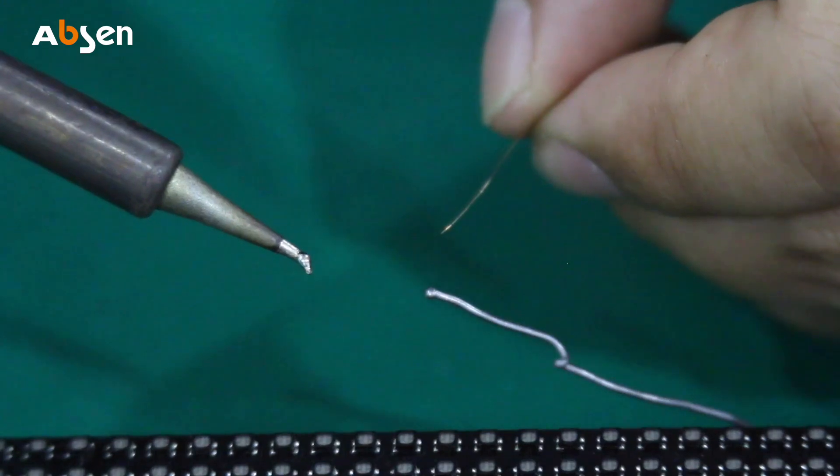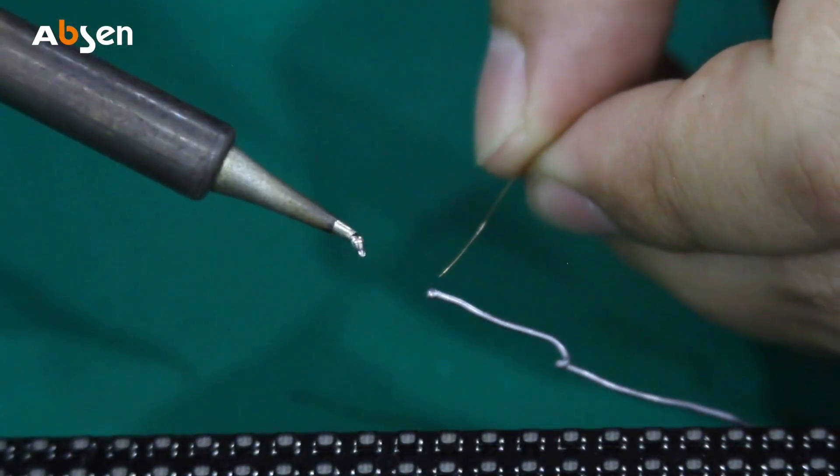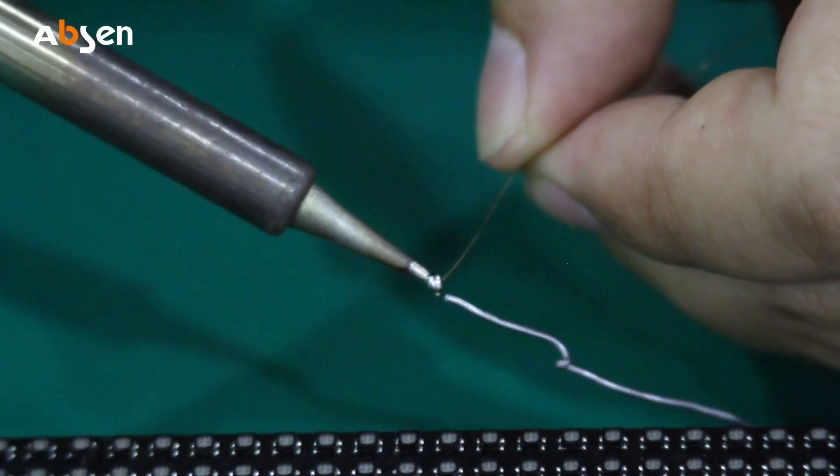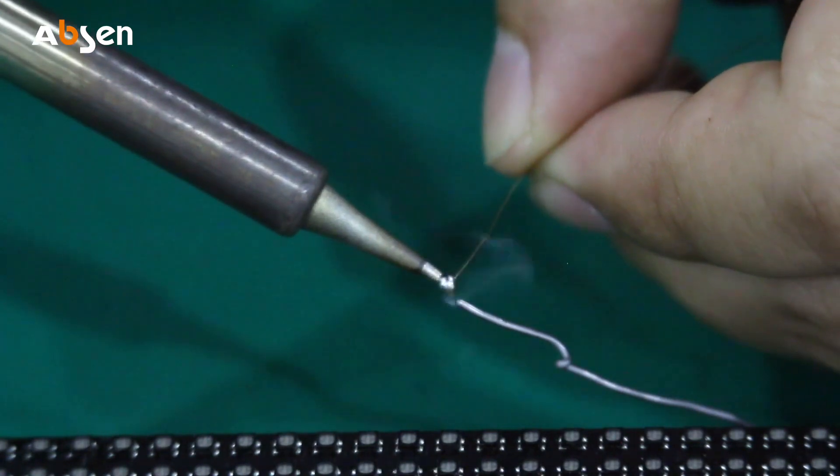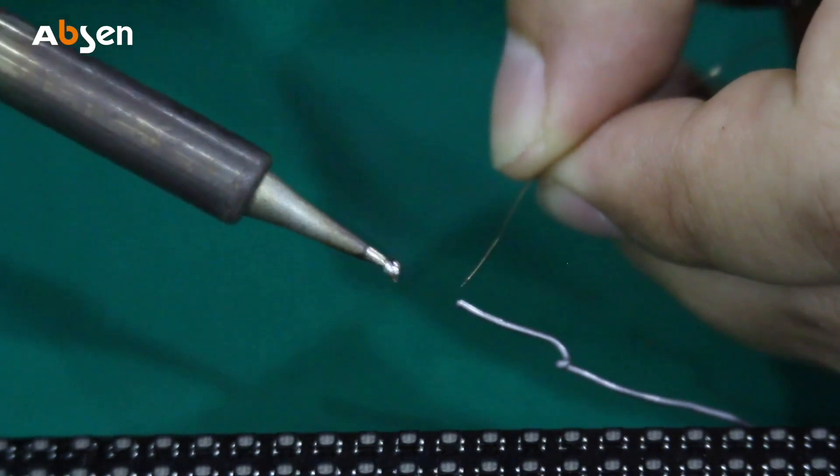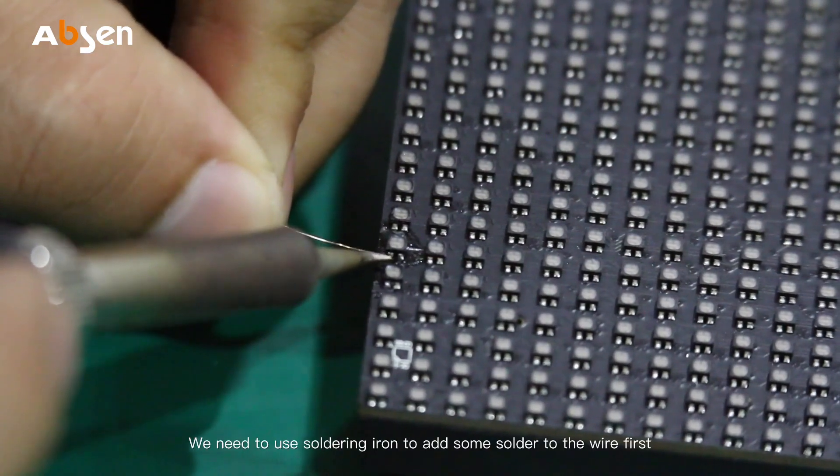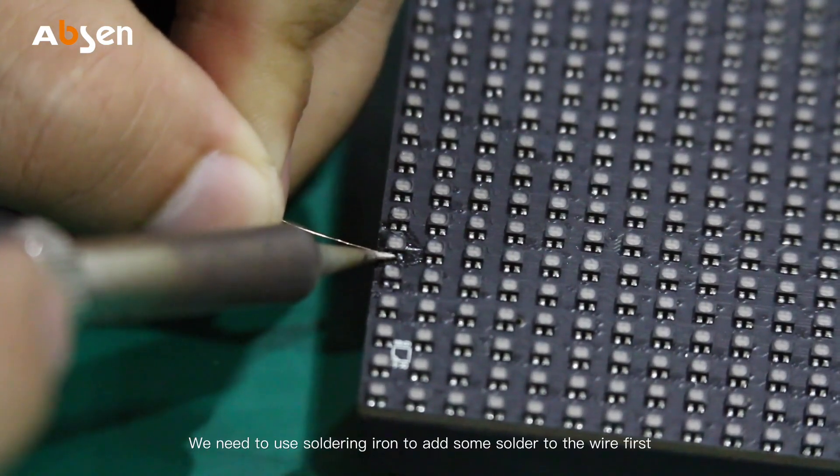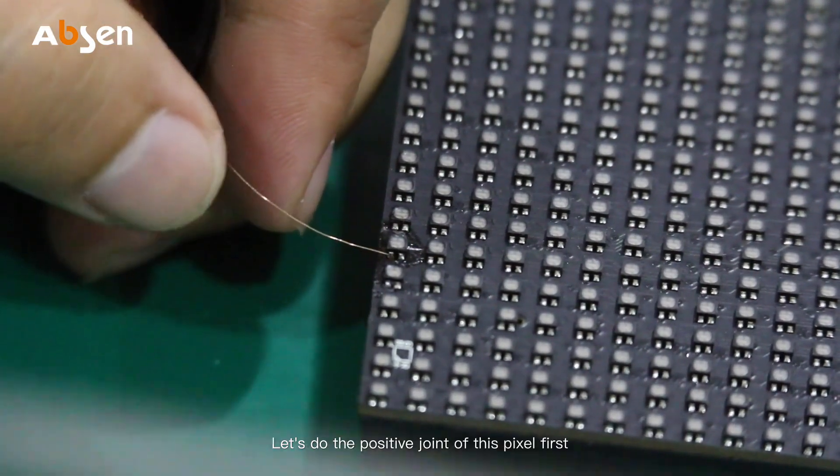Since our enameled wire is insulated, before flying the wire we need to use soldering iron to add some solder to the wire first. Okay, let's do the positive pole of the pixel first.